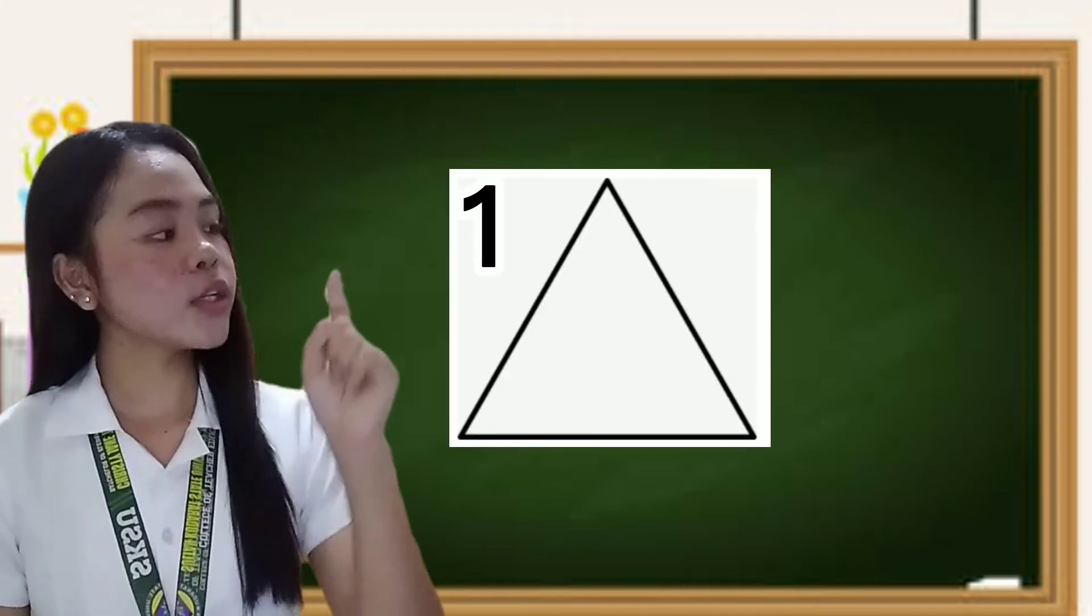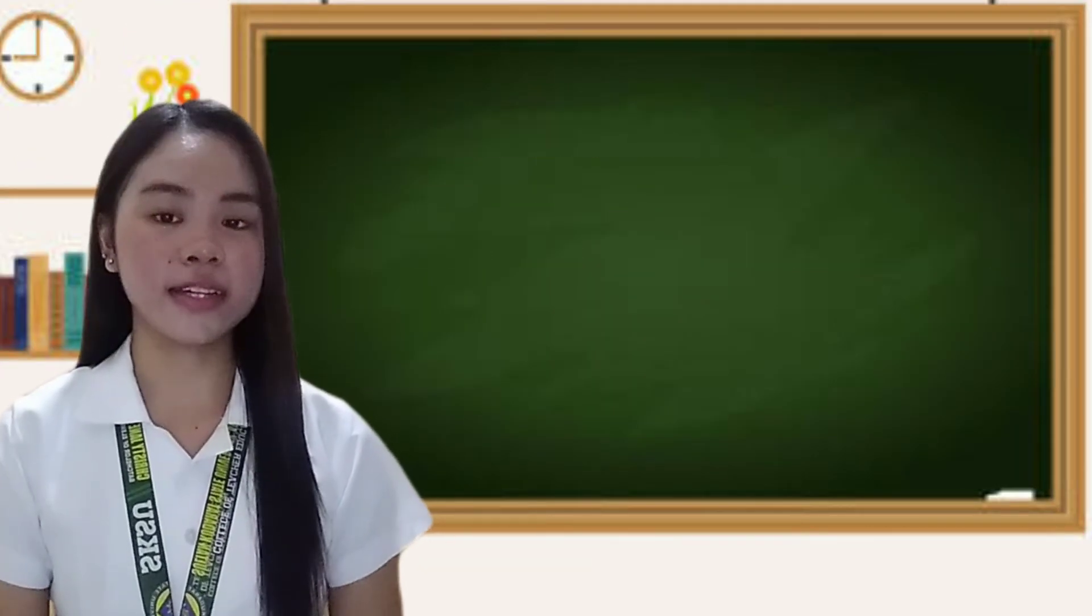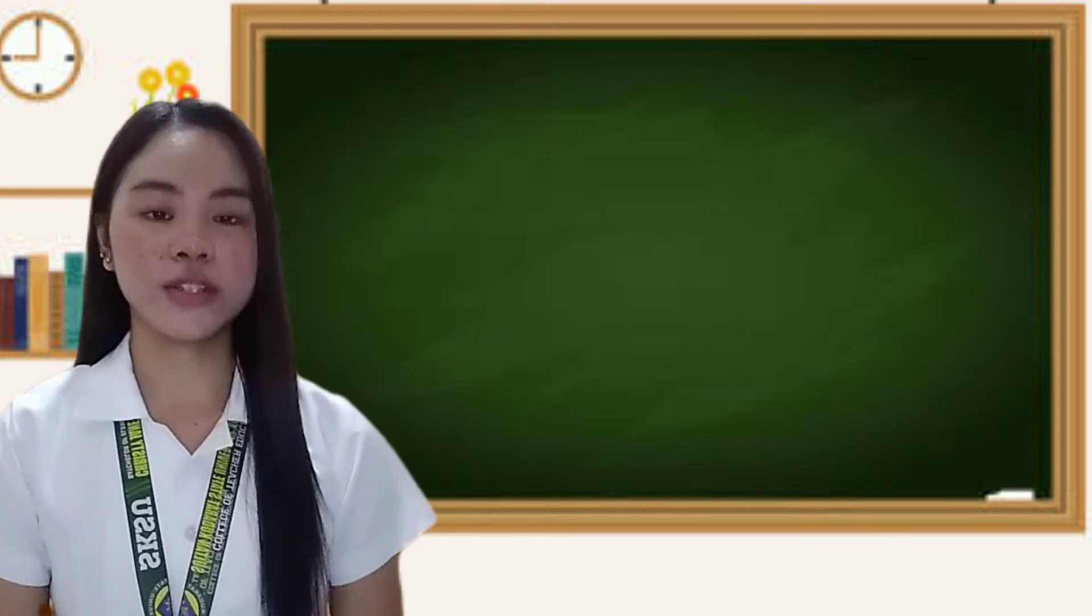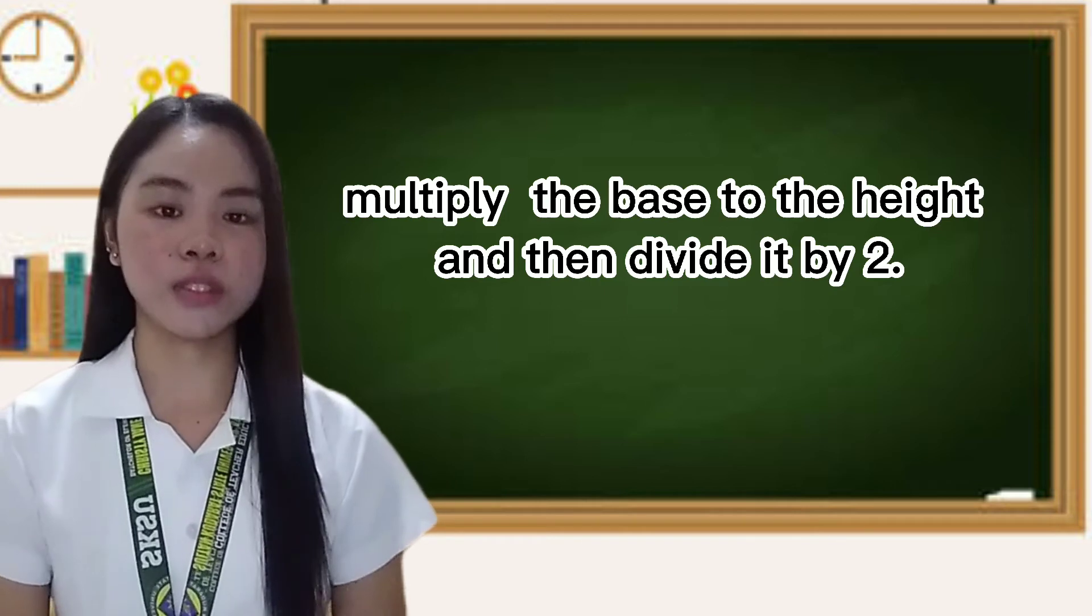One, two, and three. How do we find the area of a triangle? To find the area of a triangle, we will multiply the base by the height and then divide it by two.